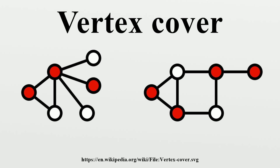A set of vertices is a vertex cover if and only if its complement is an independent set. Consequently, the number of vertices of a graph is equal to its minimum vertex cover number plus the size of the maximum independent set. The minimum vertex cover problem is the optimization problem of finding a smallest vertex cover in a given graph. If the problem is stated as a decision problem, it is called the vertex cover problem: given a graph and positive integer, does the graph have a vertex cover of size at most k?